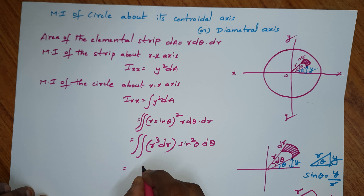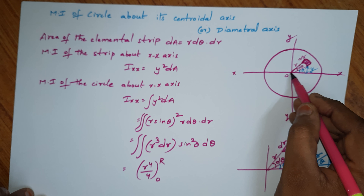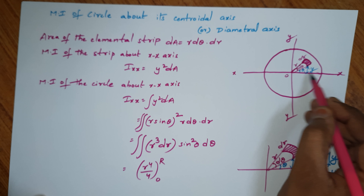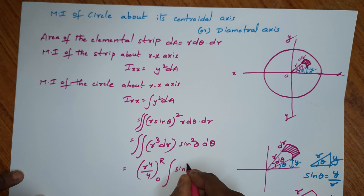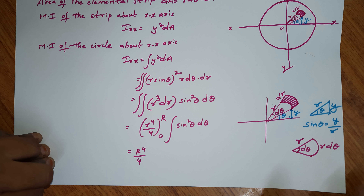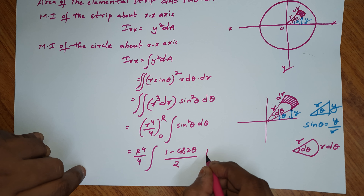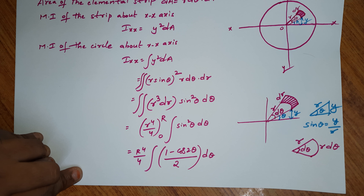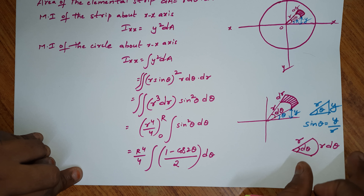Integrating r³·dr gives r⁴/4, with limits 0 to R (capital R), giving R⁴/4. For the sin²θ integral, we cannot solve it directly, so we write sin²θ = (1 − cos2θ)/2. Multiplying R⁴/4 by 1/2 gives R⁴/8. So Ixx = R⁴/8 · ∫(1 − cos2θ)·dθ.